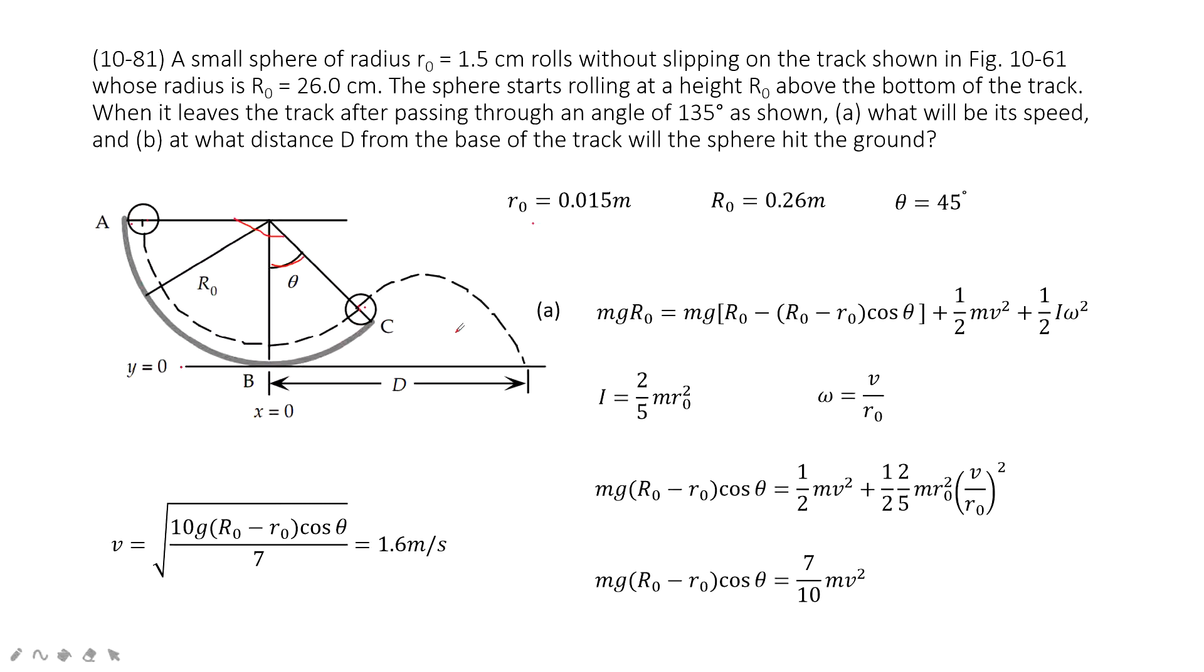Now comes to position C. We can see first we consider its potential energy. The potential energy is this one. We draw a triangle. So the distance from position C to the reference point.